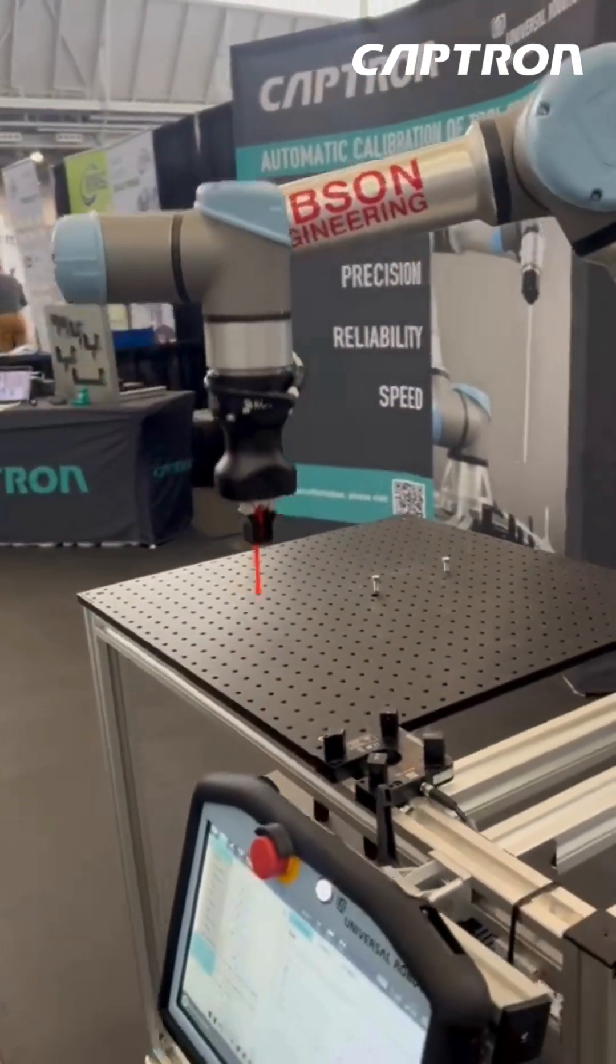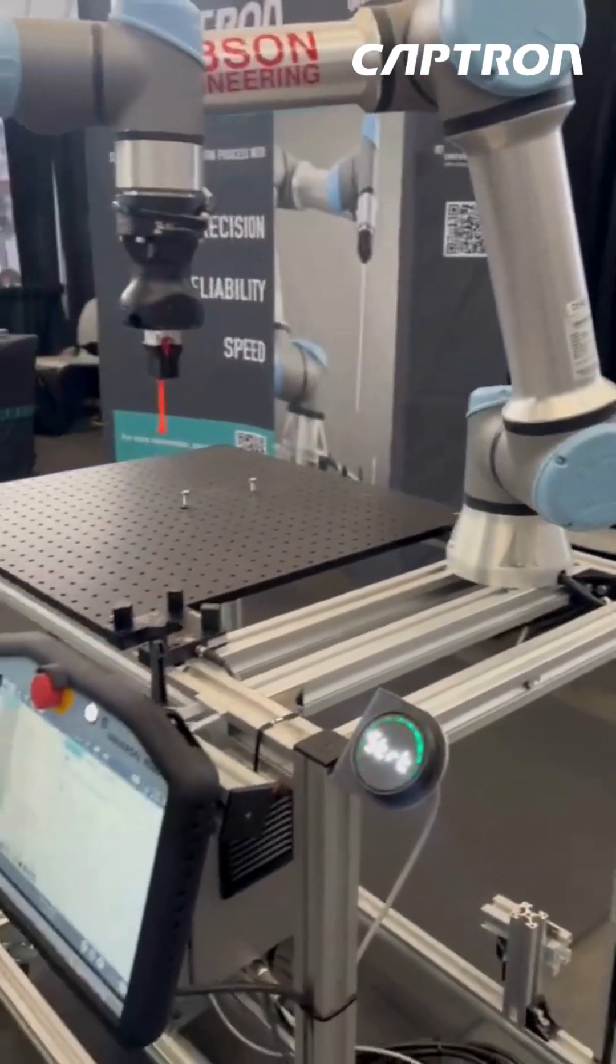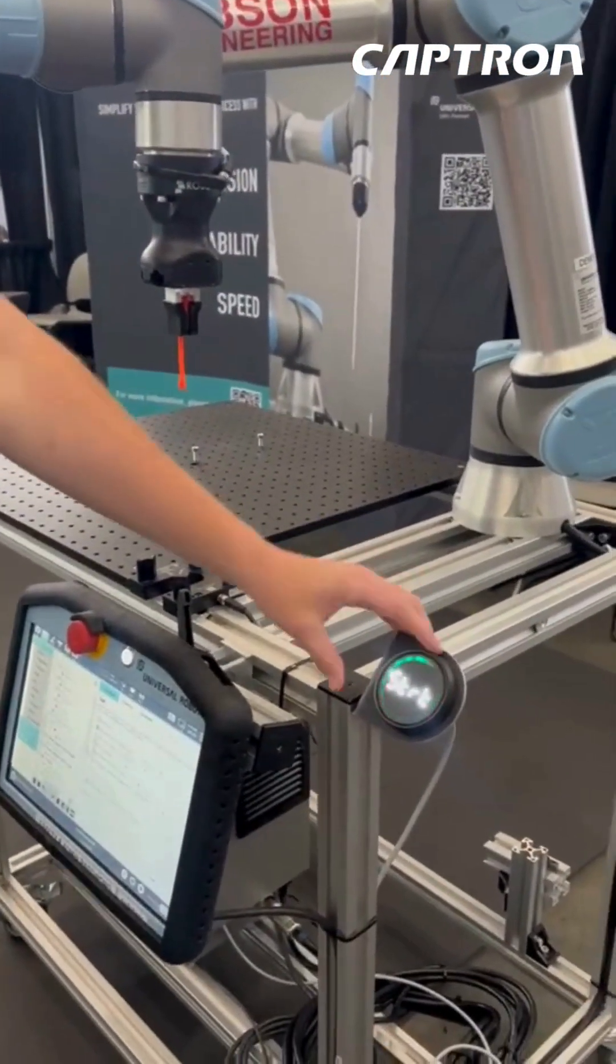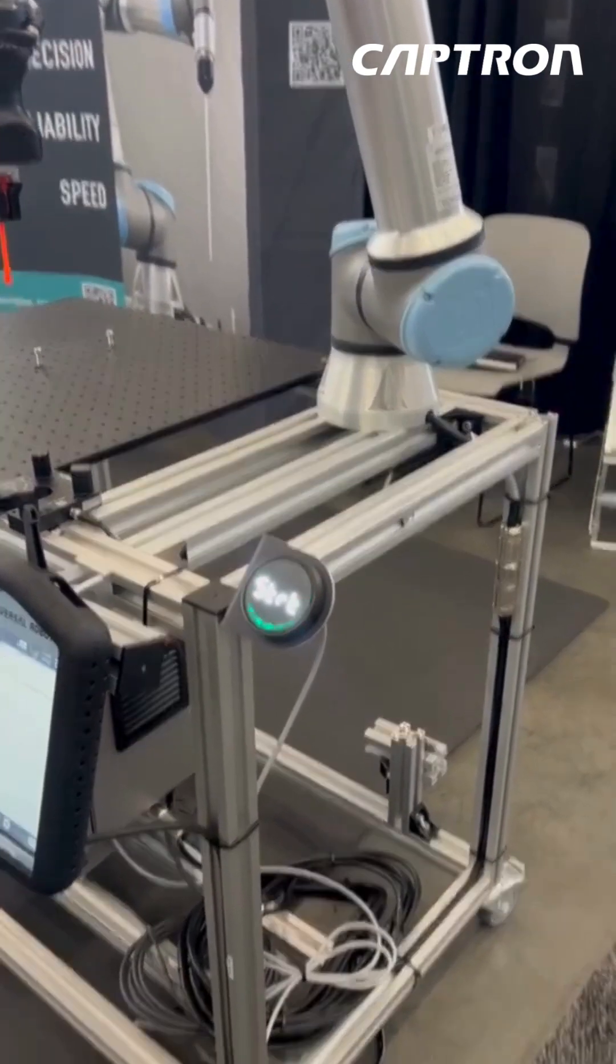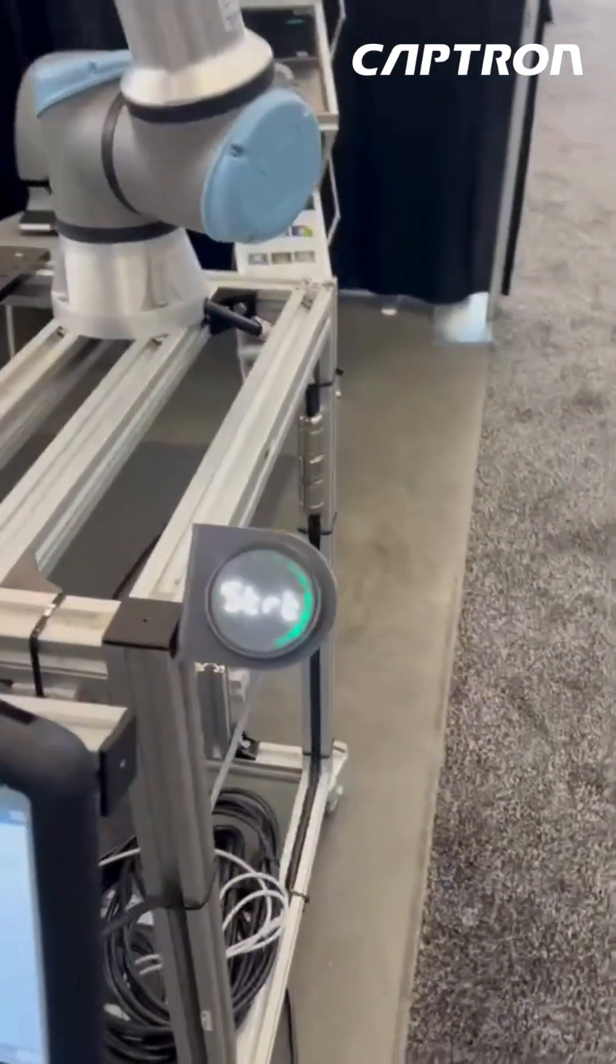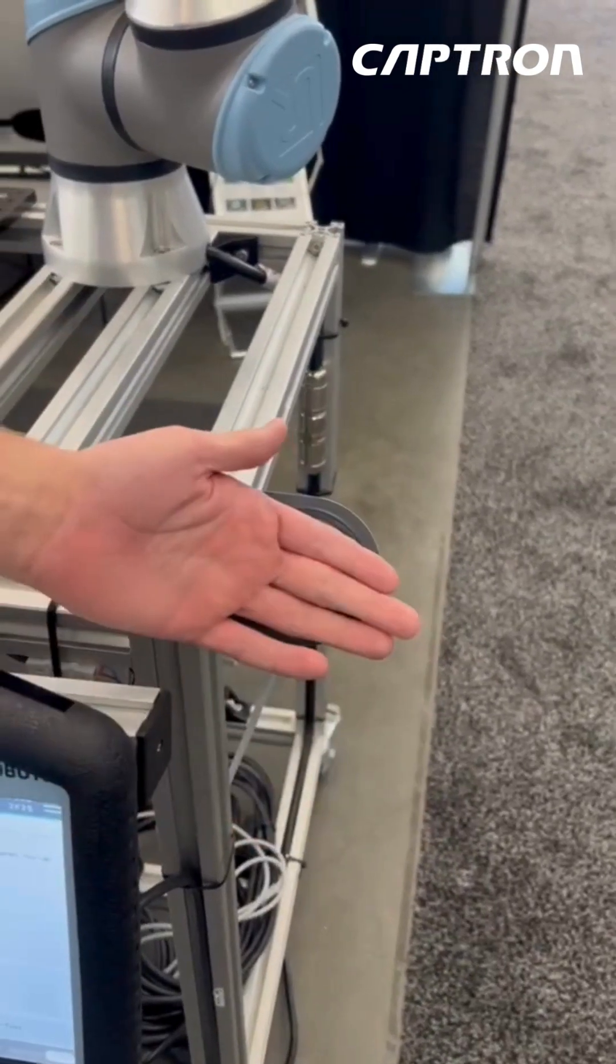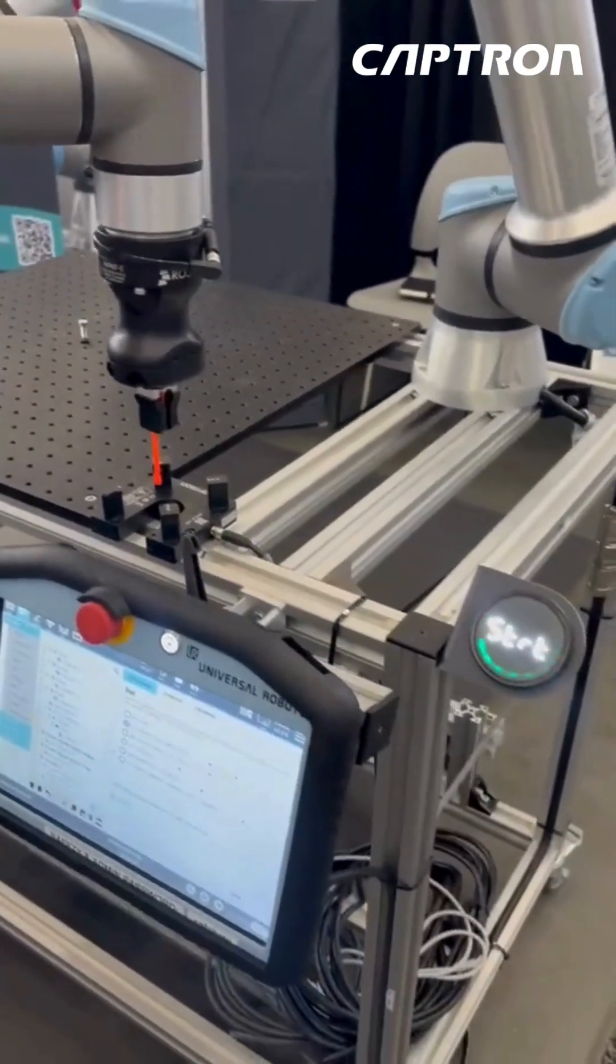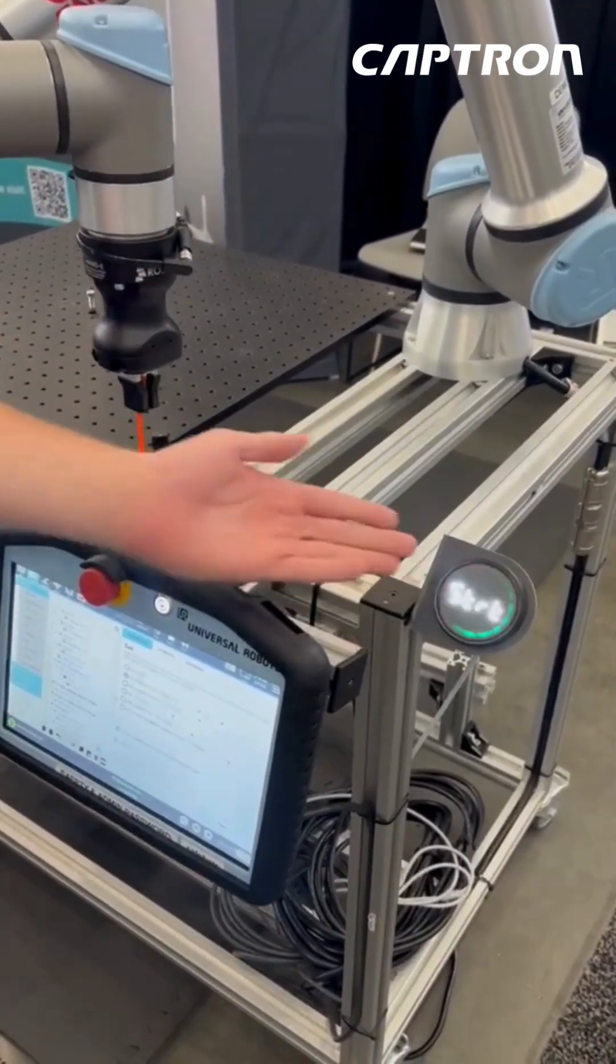Eli, can you explain what our 40 series puck is doing here as well? Yeah, so the 40 series puck has a digital display on it. This allows simple feedback to the operator. Particularly with the robot, you might want to know, hey, I need to press this to start the recalibration process. And it also gives simple feedback as it passes through the lasers.